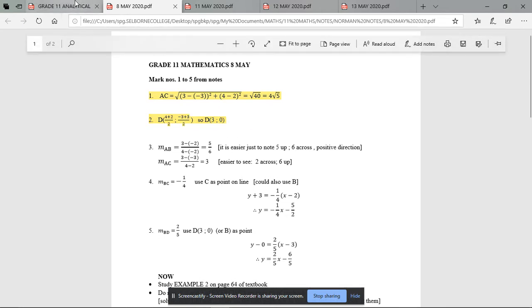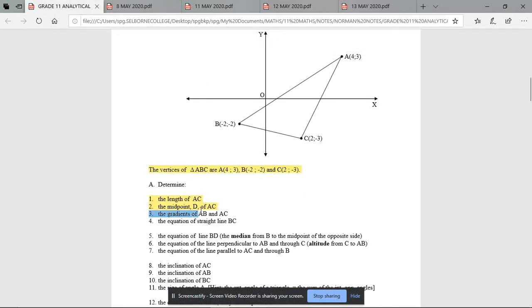Number 3, work out the gradients of AB and of AC. So there's AB there, a positive direction, and AC is also positive. What's the formula for the gradient? Change in Y over change in X.